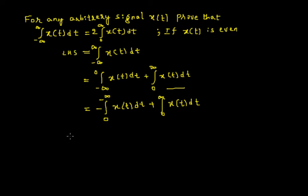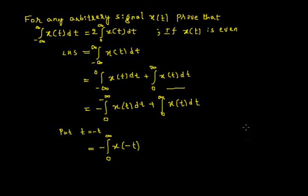Now in the first term I will put t equal to minus t and see what happens. When I substitute t with minus t: 0 remains as it is, minus infinity becomes plus infinity, and x(t) becomes x(minus t). Also, dt becomes minus dt. So that minus and the existing minus sign become plus. The result is integration from 0 to infinity of x(minus t) dt, plus the second term retained as integration from 0 to infinity of x(t) dt.